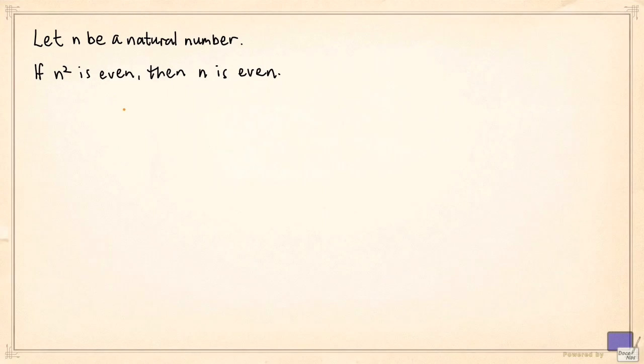But we're going to give an indirect proof of this, so we're going to prove the contrapositive statement, which is as follows. If n is odd, then n squared is odd.